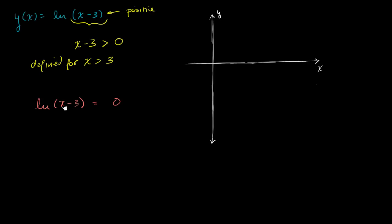Well, one way to think about this is to view these both as exponents and raise e to both of these powers. So you could say that e to the natural log of x minus 3 is the same thing as e to the 0.